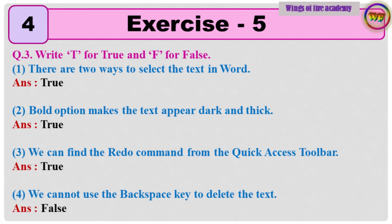Question 3: Write T for True and F for False. 1: There are 2 ways to select the text in Word. Answer: True. 2: Bold option makes the text appear dark and thick. Answer: True.